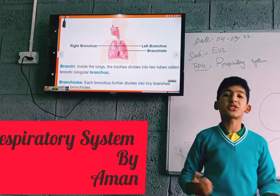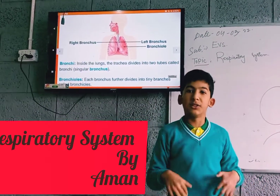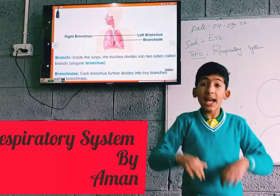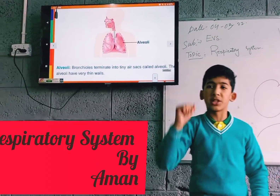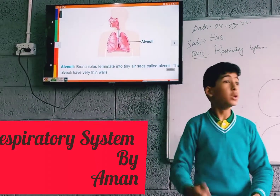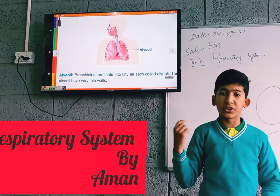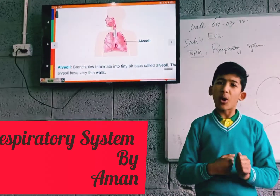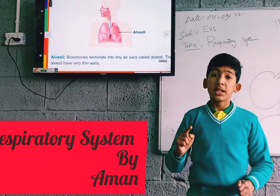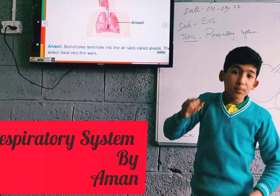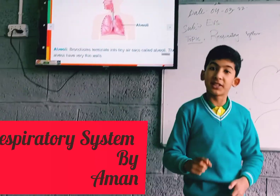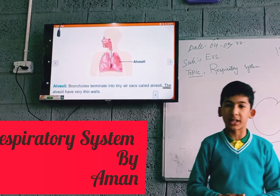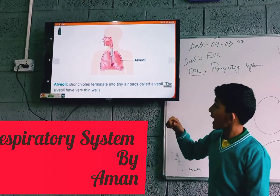The bronchioles terminate into thin air sacs called alveoli. These air sacs are filled with air. The alveoli have very close contact with the blood capillaries. When we inhale, air enters and oxygen from the air enters the blood. The reason only oxygen enters the blood is because oxygen reacts with the components in the blood, making it oxygenated blood. The alveoli are very thin, ball-like structures.